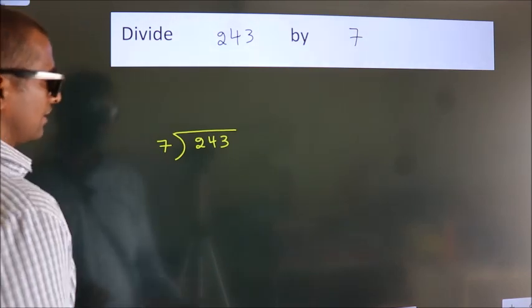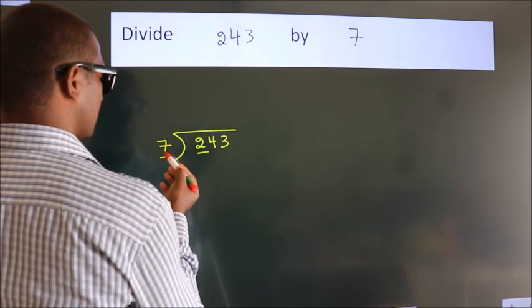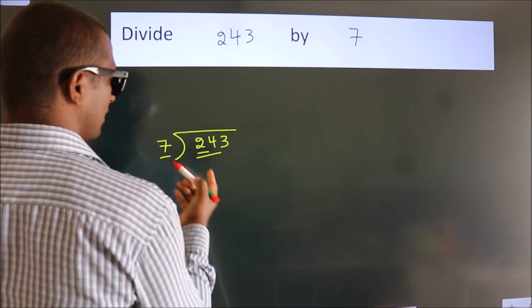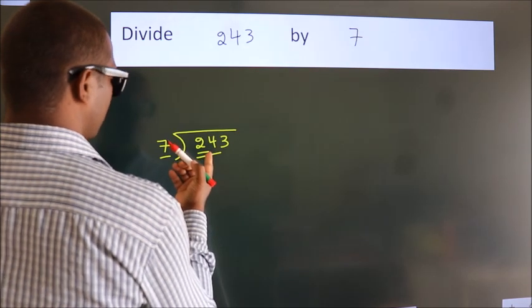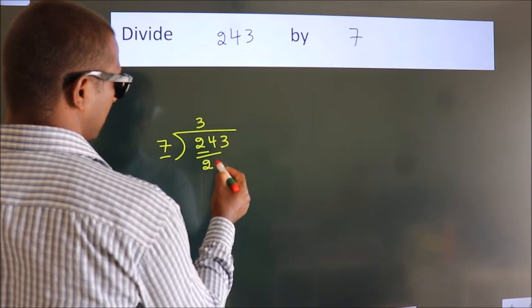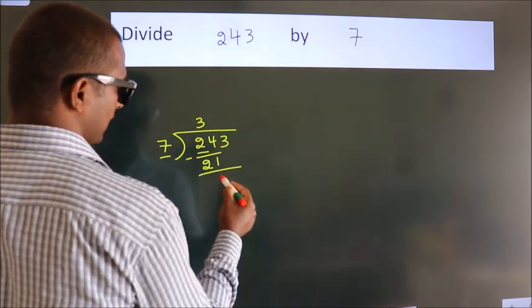Next, here we have 2, here 7. 2 is smaller than 7, so we should take 2 numbers: 24. A number close to 24 in the 7 table is 7 threes, 21. Now we should subtract. We get 3.